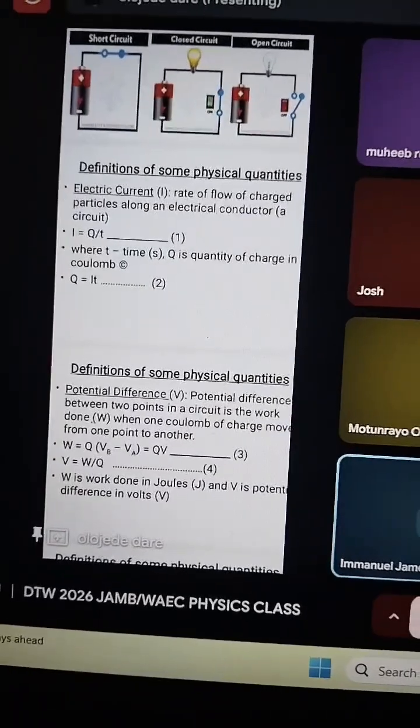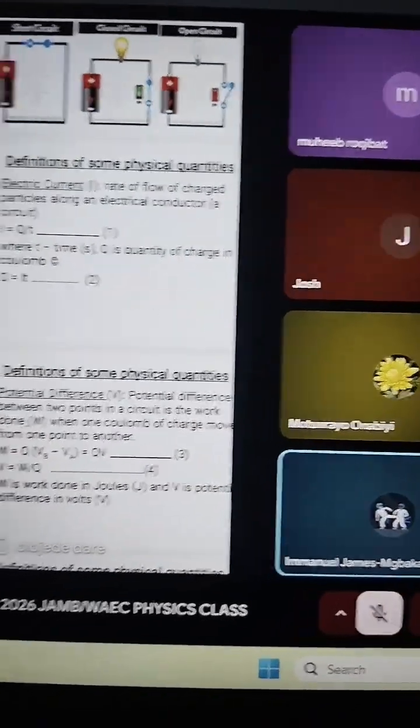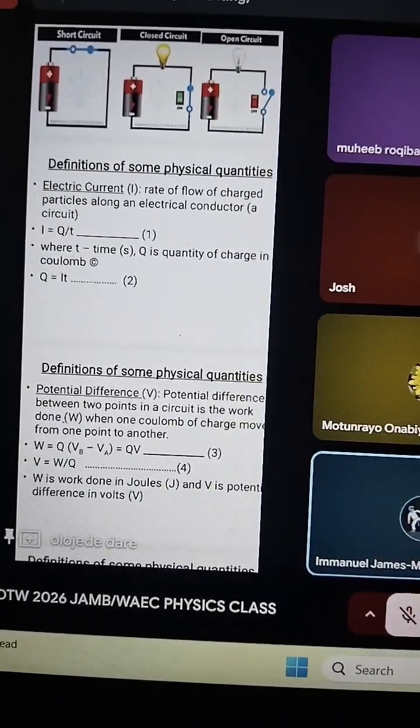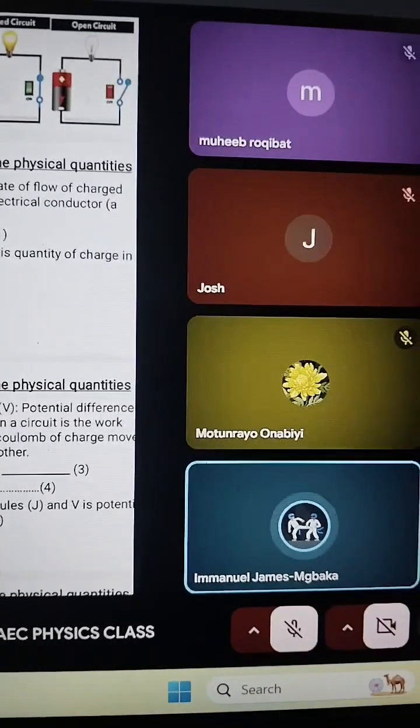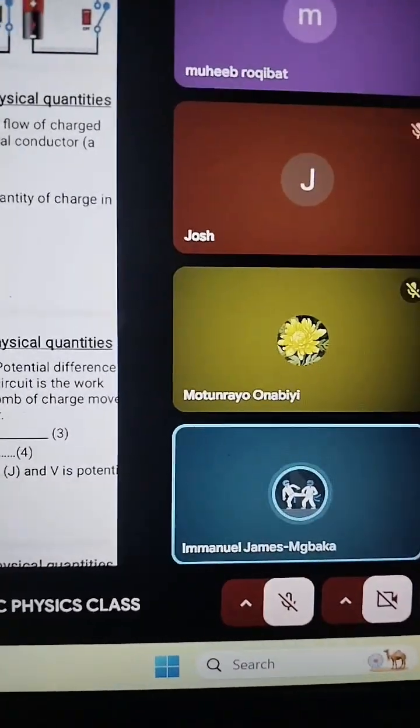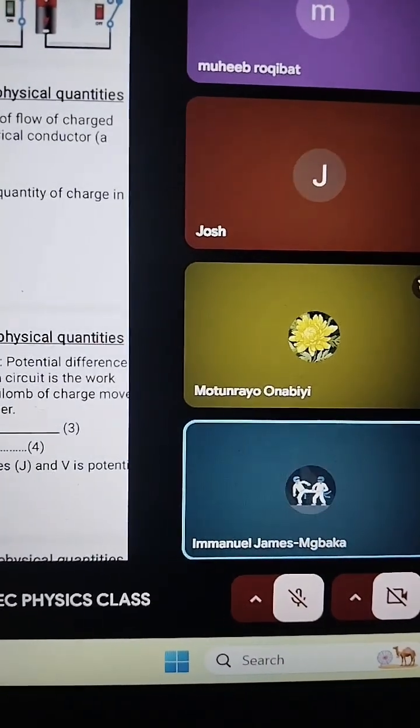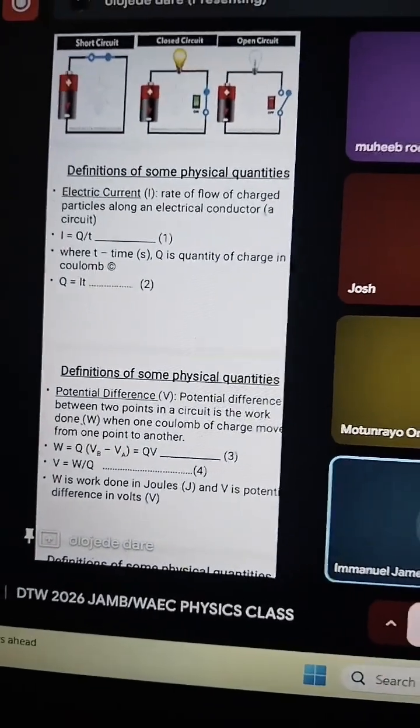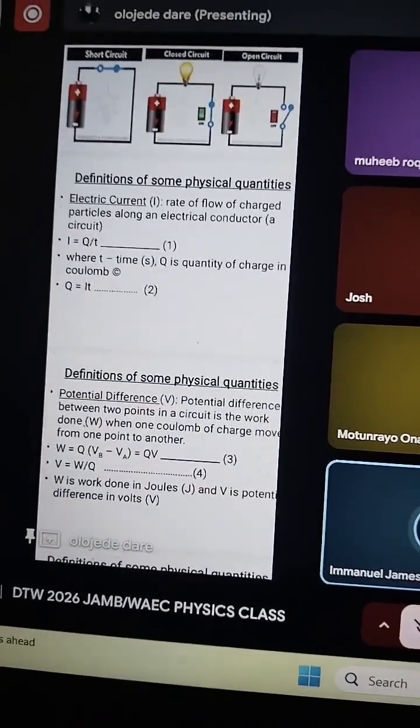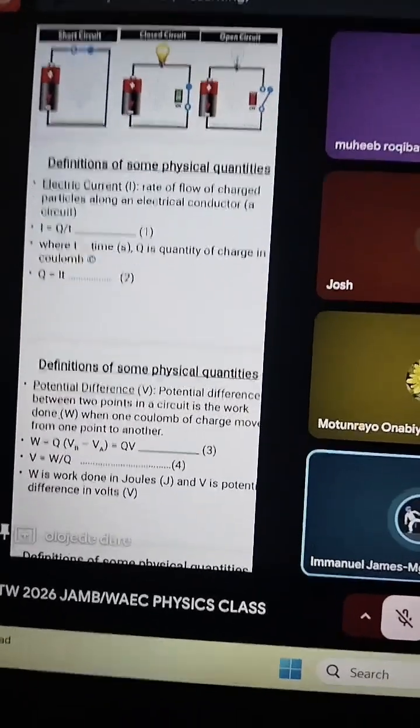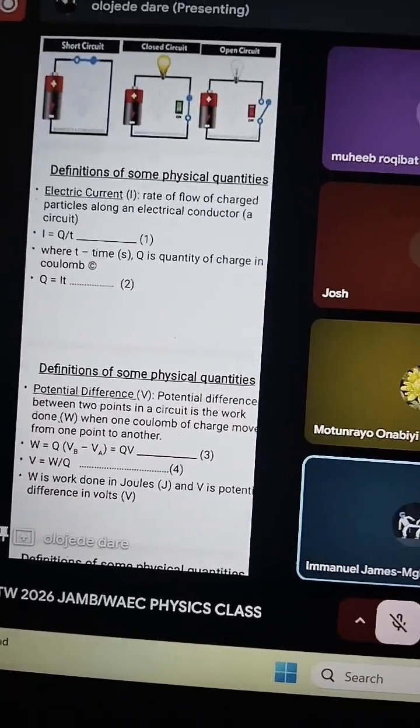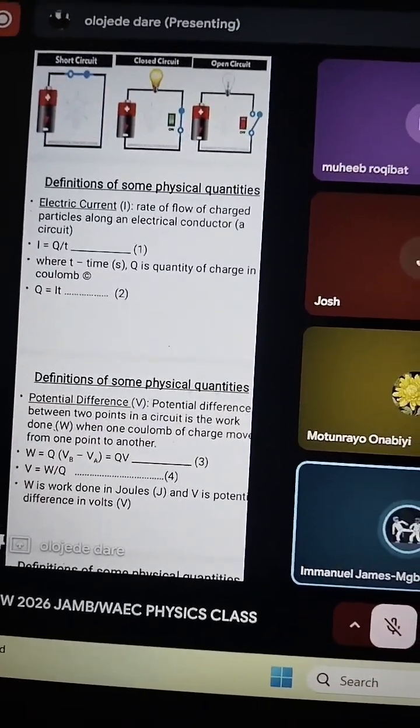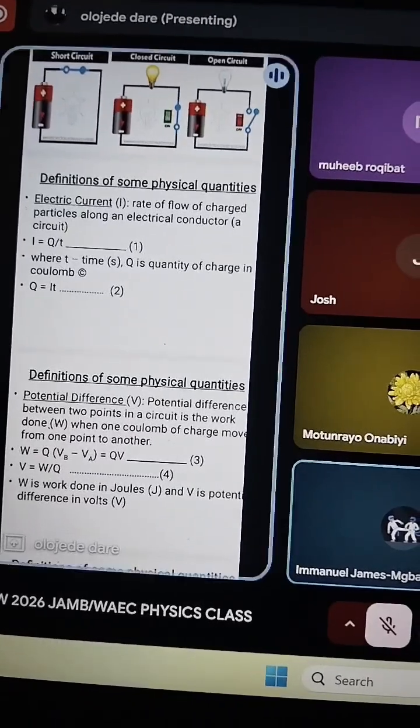Definition of some physical quantities. Electric current: rate of flow of charged particles along an electrical conductor, that is the circuit. I equals Q over T, where T is time in seconds. Q is quantity of charge in coulombs. Q equals IT. Very good.